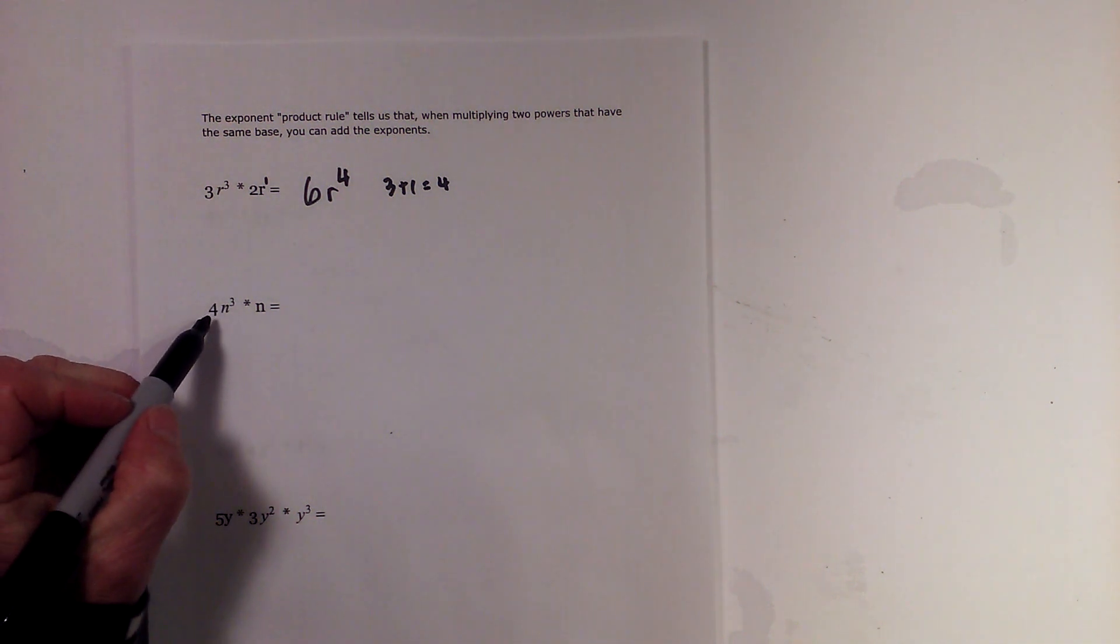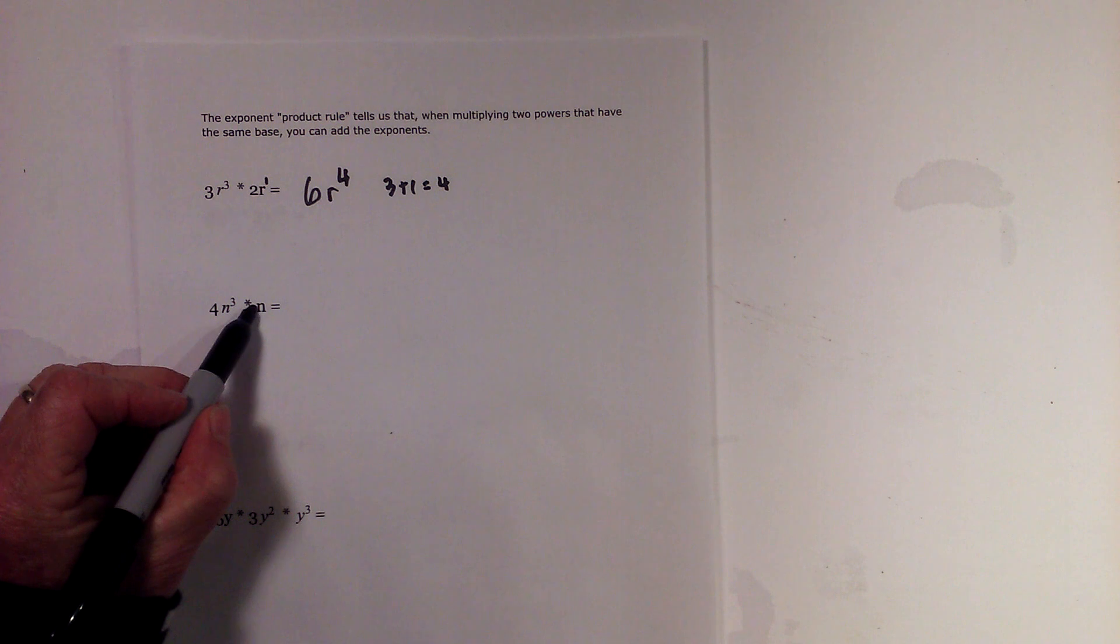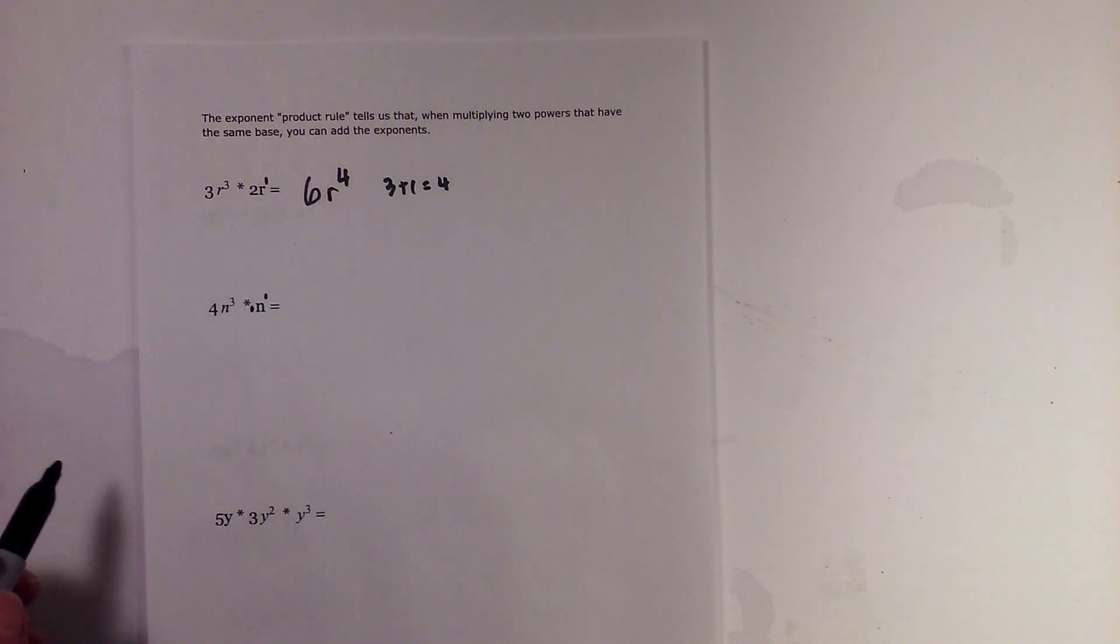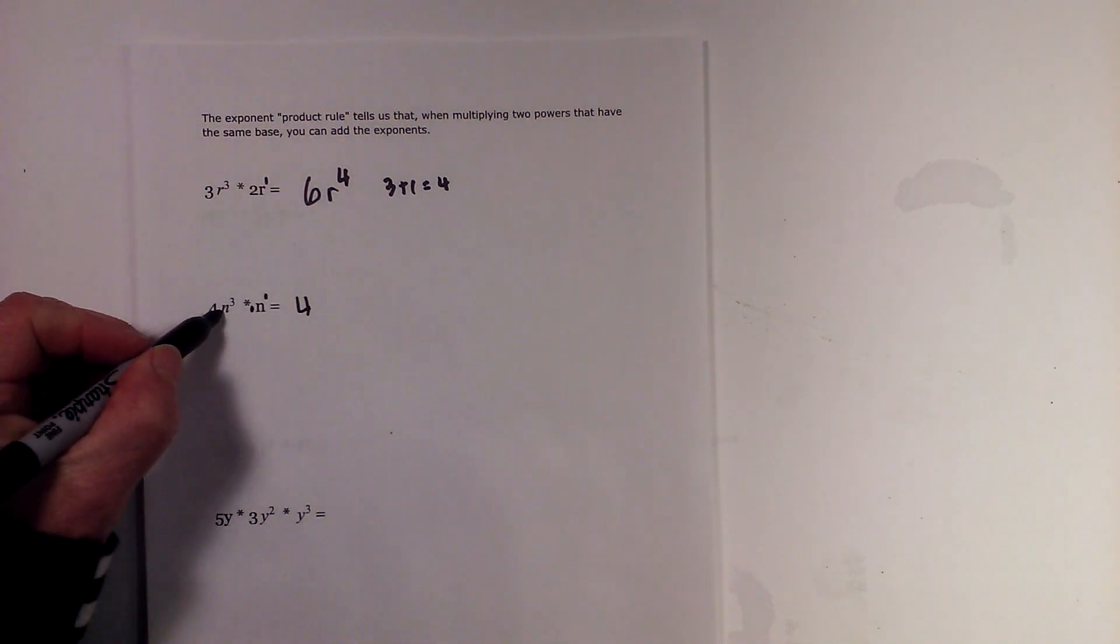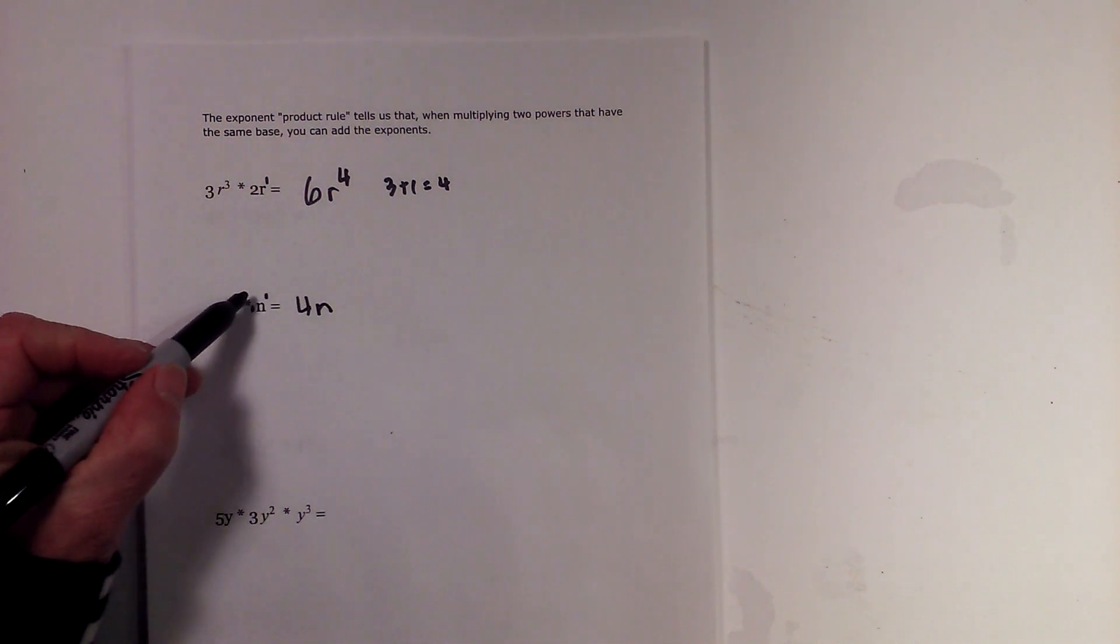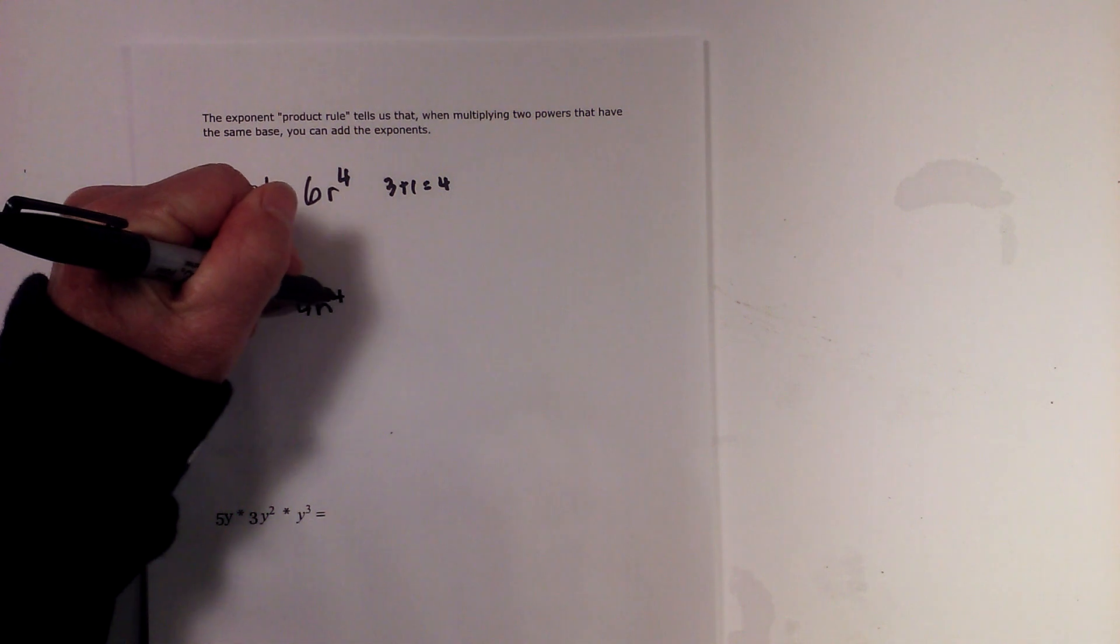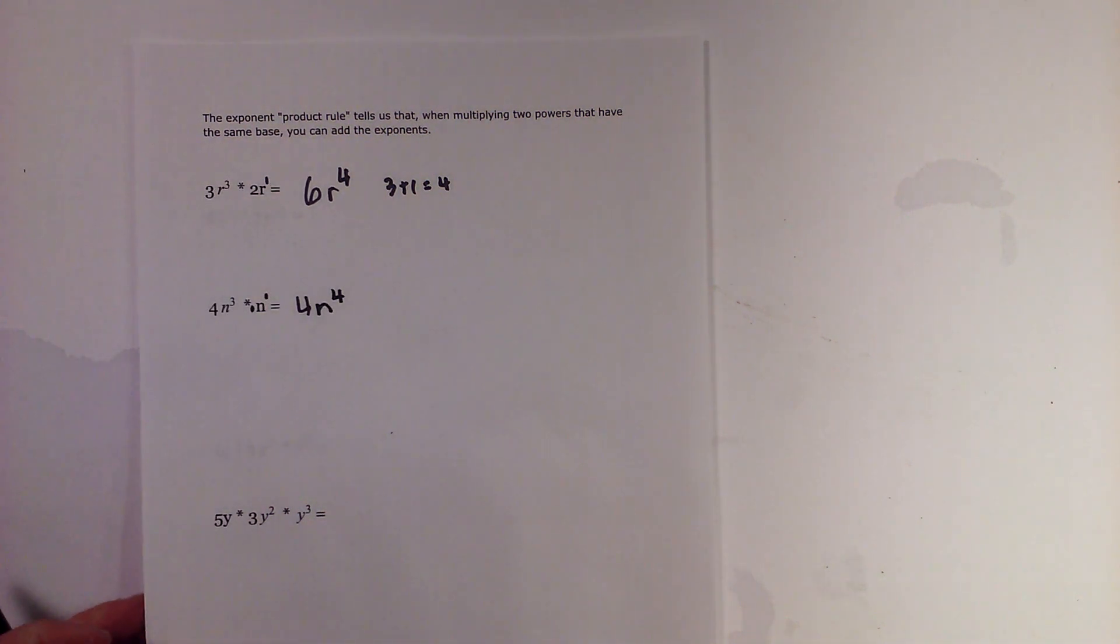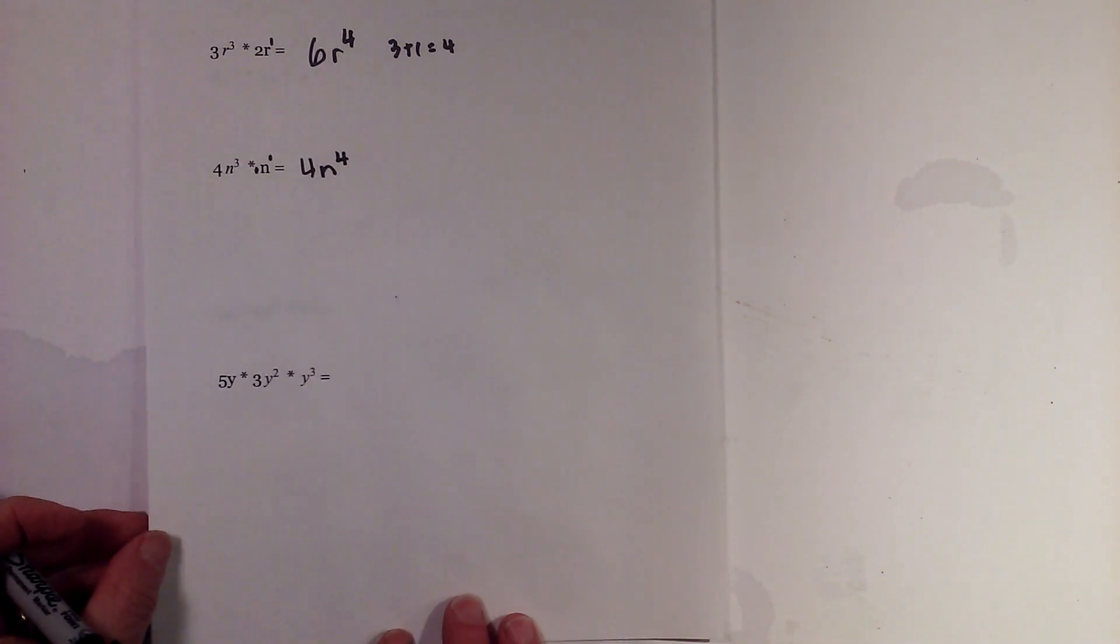The next one is very similar except there's nothing to multiply—assume there's a one there and a one here. Four times one is four, and write the n, and then three plus one is four also.